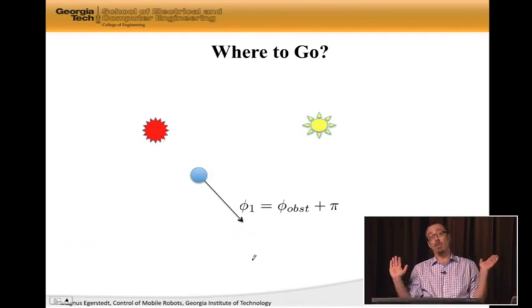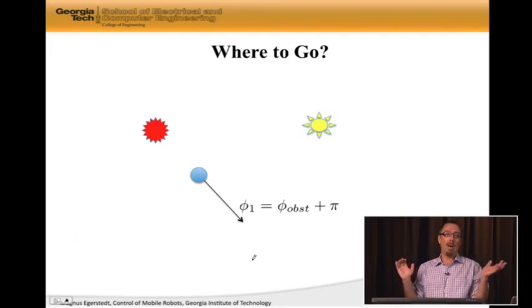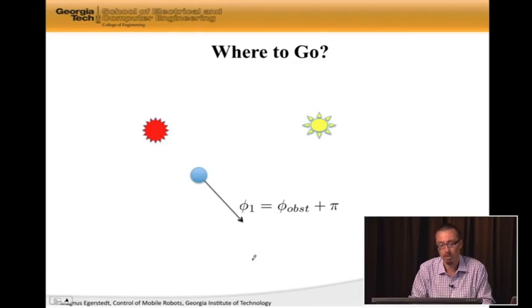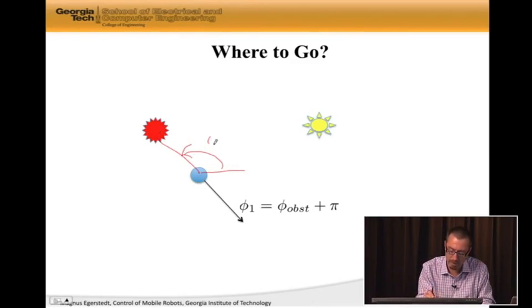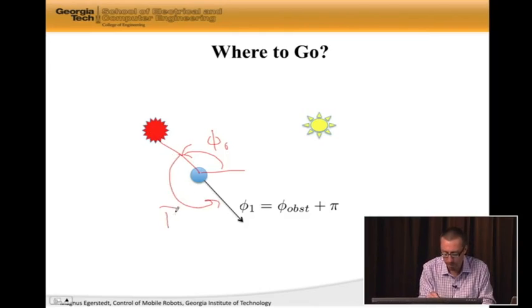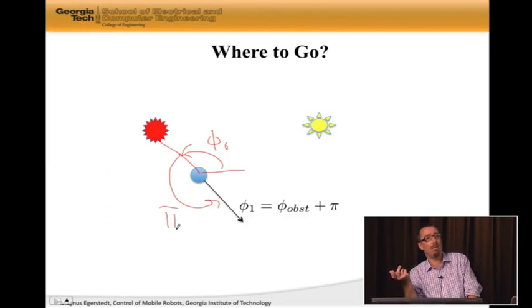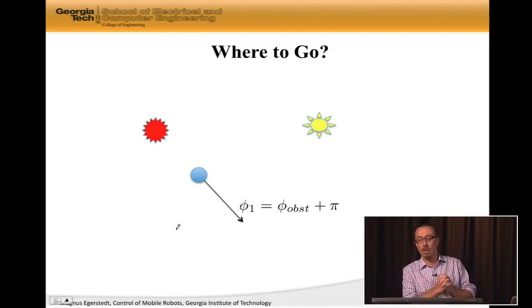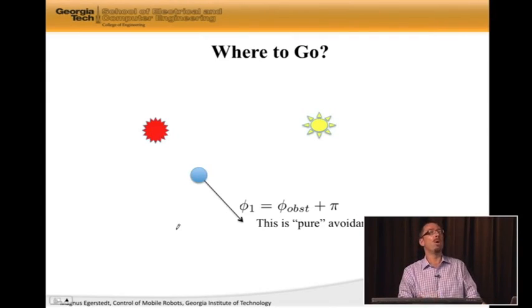So phi obst is this angle. Here is phi obst. And in fact, phi obst is, we can write it as arc tangent y obst minus y over x obst minus x. So, this is some way in which we compute the angle to the obstacle. And then we can say phi one, suggestion one, which is the super paranoid robot who is avoiding obstacles at all cost, it's adding pi to the mix. And by the way, why am I adding pi and not subtracting pi? The point is that it actually doesn't matter if you add pi or subtract pi because by now we know that angles are slightly scary objects. And we always take something like arc tangent two to ensure that we stay within minus pi and pi.